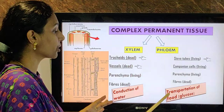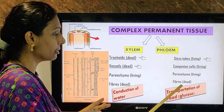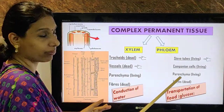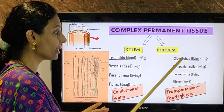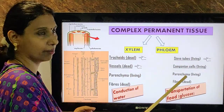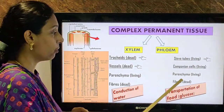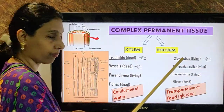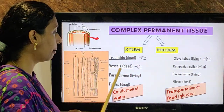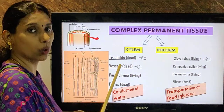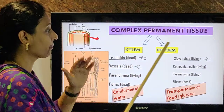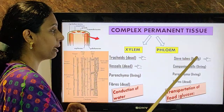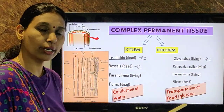In phloem, in transportation of glucose, out of the four elements, fibres are dead — the remaining three are living. Sieve tubes are living, companion cells are living, parenchyma are living cells — only fibres are dead. The element helping in translocation is sieve tubes. In xylem, it is tracheids and vessels helping in the transportation of water upwards. And in phloem, it is the sieve tubes helping in translocation of food.